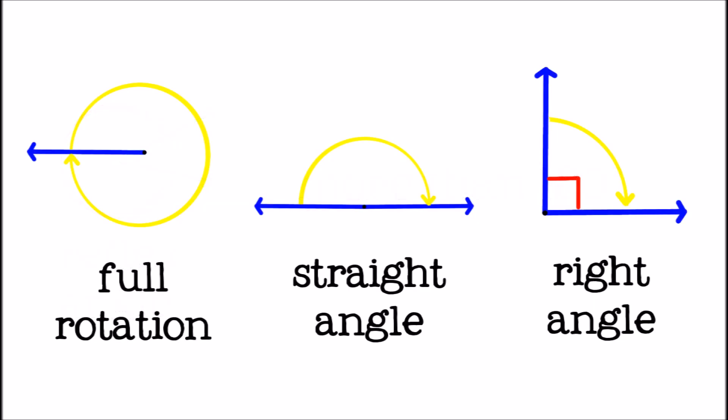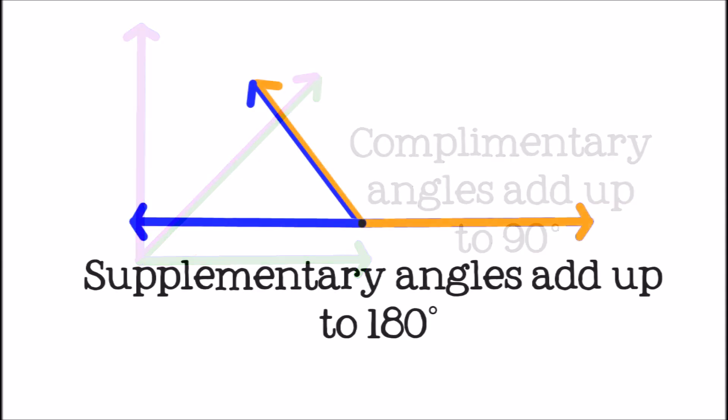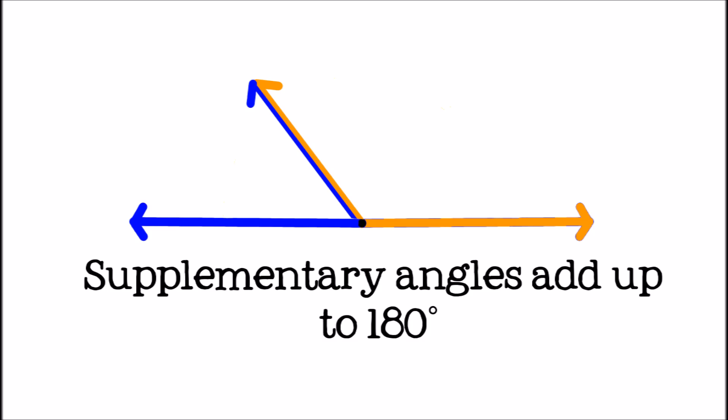Some angles may be added together to get one of the important angles we talked about earlier. Complementary angles are two angles that add up to a 90 degree angle. Supplementary angles are two angles that add up to a 180 degree angle.